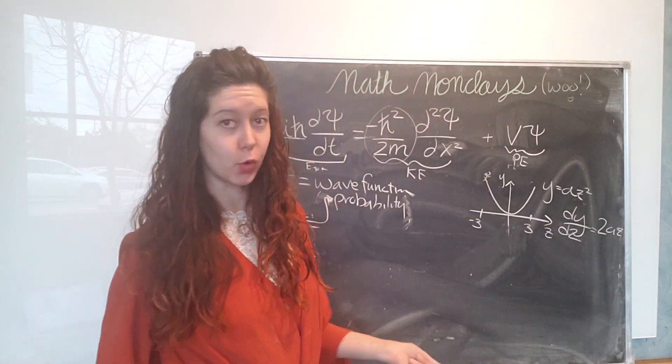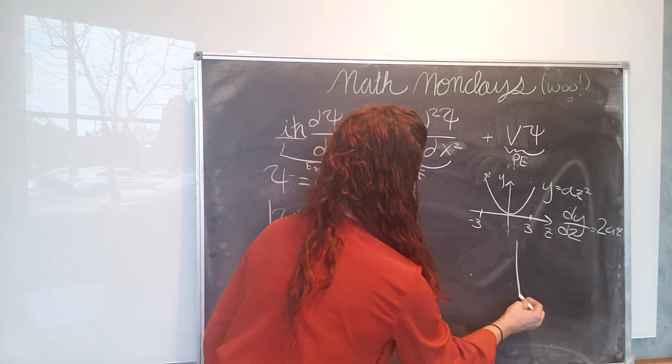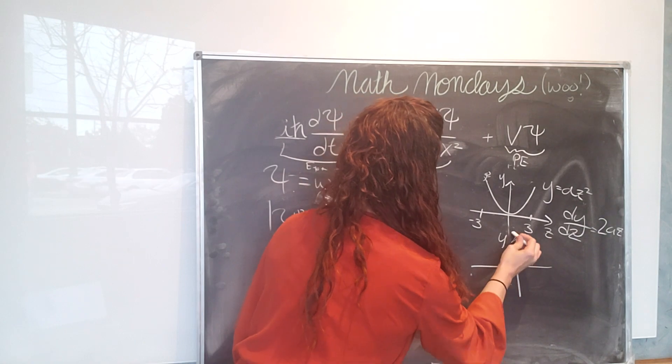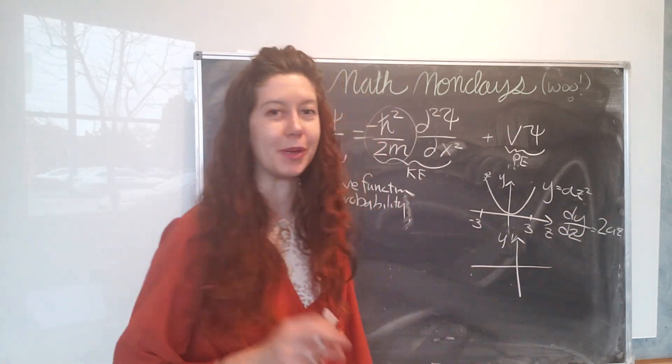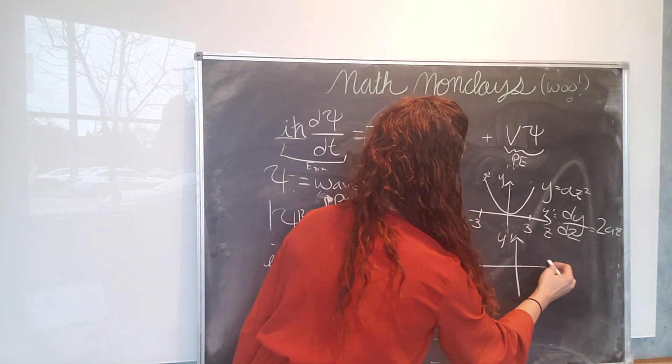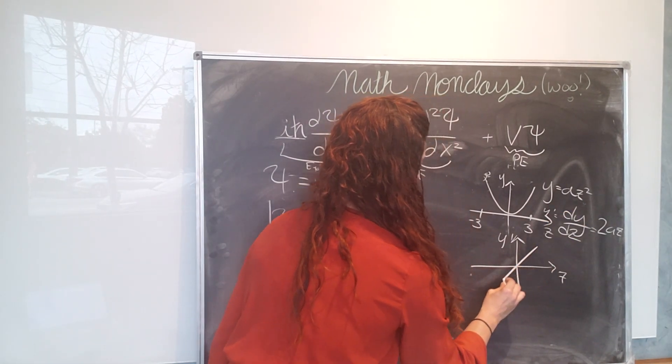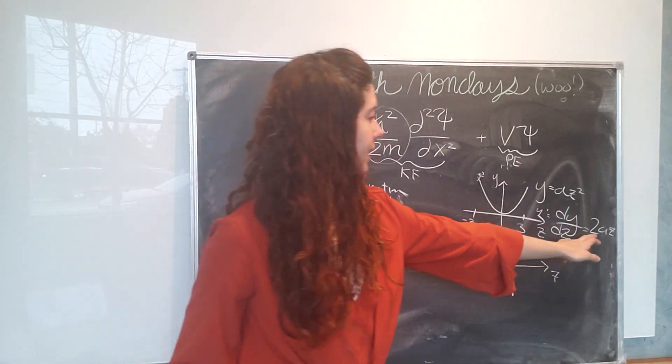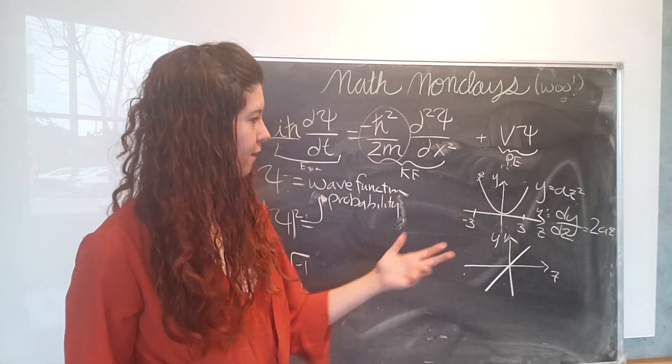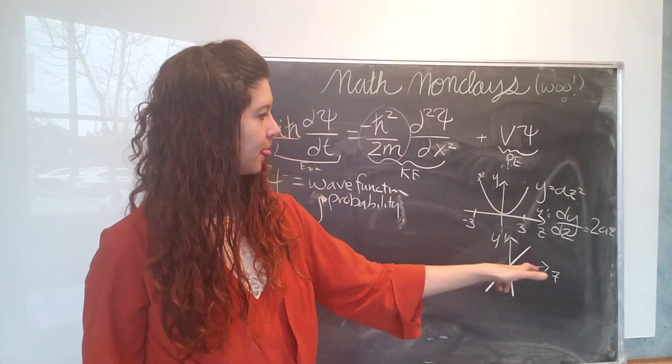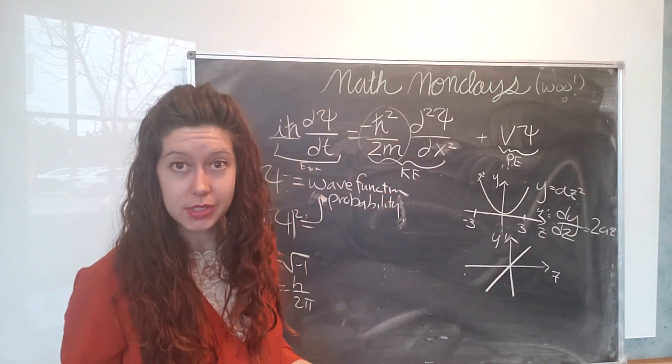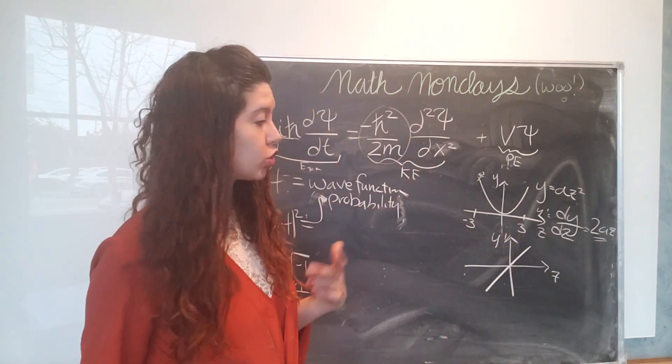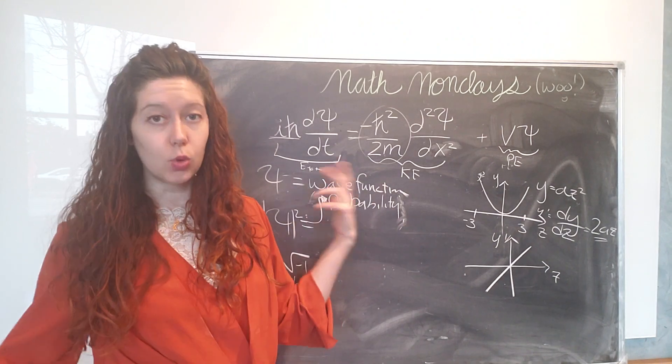Let's plot that so we can better understand it because pictures are super helpful. So this is y prime which is just dy dz. This is z. And what we got is that we have a change in our slope or the steepness of our parabola is equal to 2 az. And that's just the equation of a line. Whoa! And our slope in that case would be 2a. So how the slope is changing over our hike is equal to 2a.